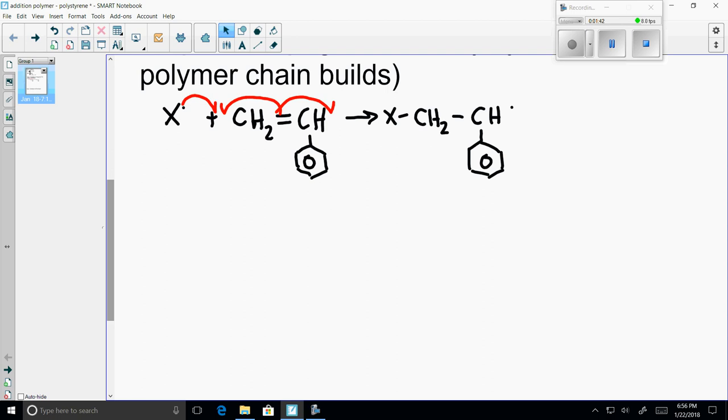Now, our product out of step one becomes our reactant into step two. X bonded to CH2CH with an aromatic piece below, and a free radical electron. We add a second piece of monomer.